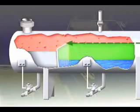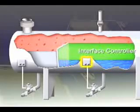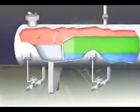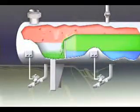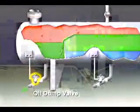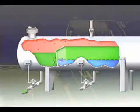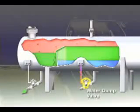A weir maintains the oil level while an interface controller maintains the water level. The oil spills over the top of the weir, and then a level controller which operates the oil dump valve controls its level.